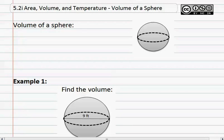5.2i, area, volume, and temperature. Volume of a sphere. The volume of a sphere can be found using the formula volume, or V, equals four-thirds pi r cubed.